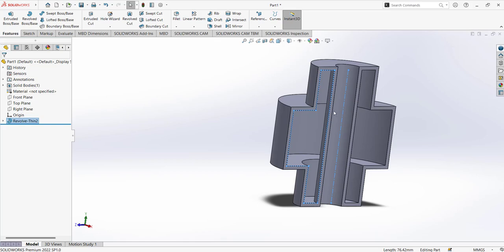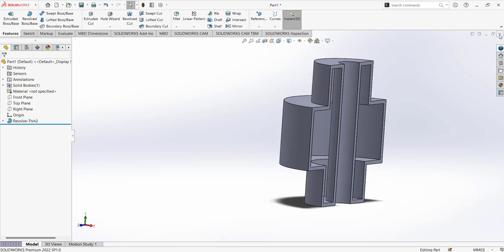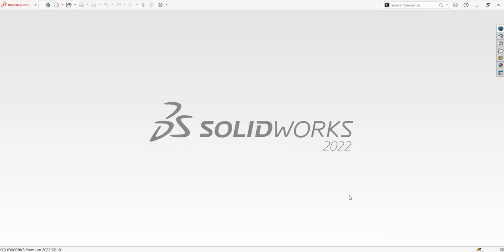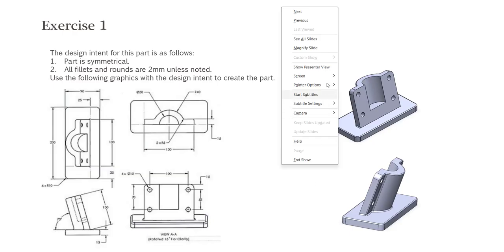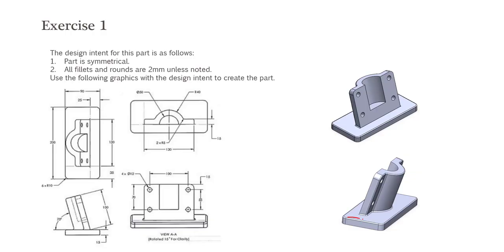Let's shift to the exercise we are going to model in this tutorial. One special thing about this drawing is that there is a base plate, and a feature drawn at an angle of 75 degrees from the base plate. The plan is: first create Plane 1 on the base plate, then create another plane perpendicular to Plane 1, then draw the feature as a thin feature on Plane 2 and extrude it so that it touches the base plate.